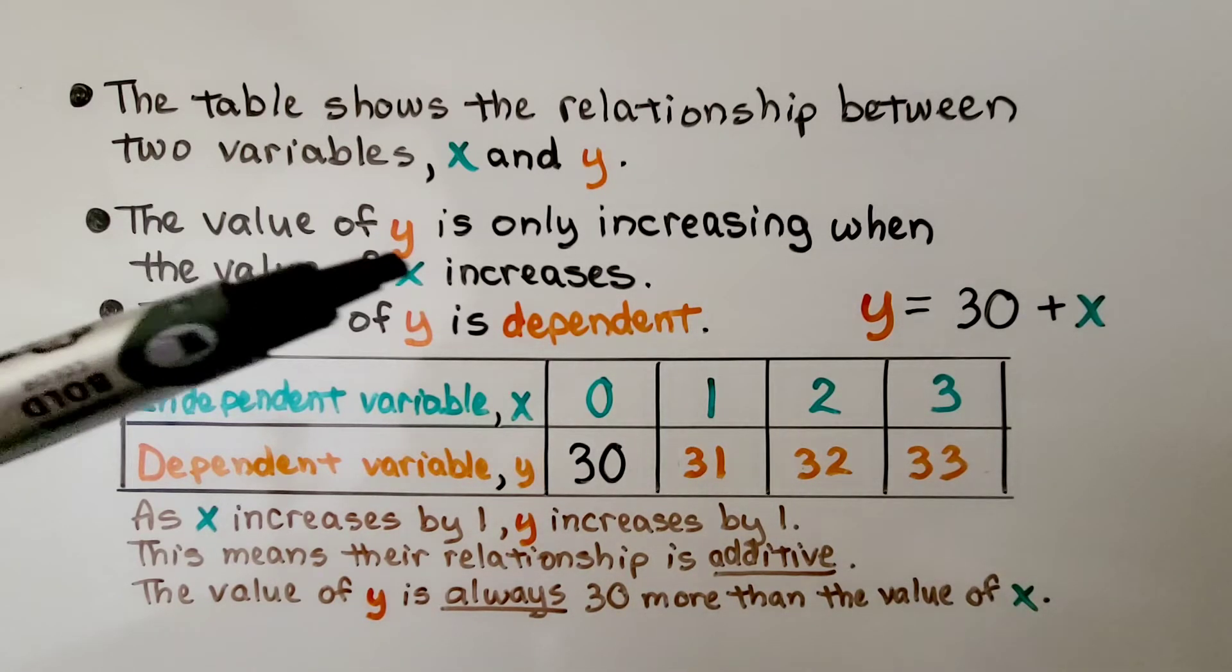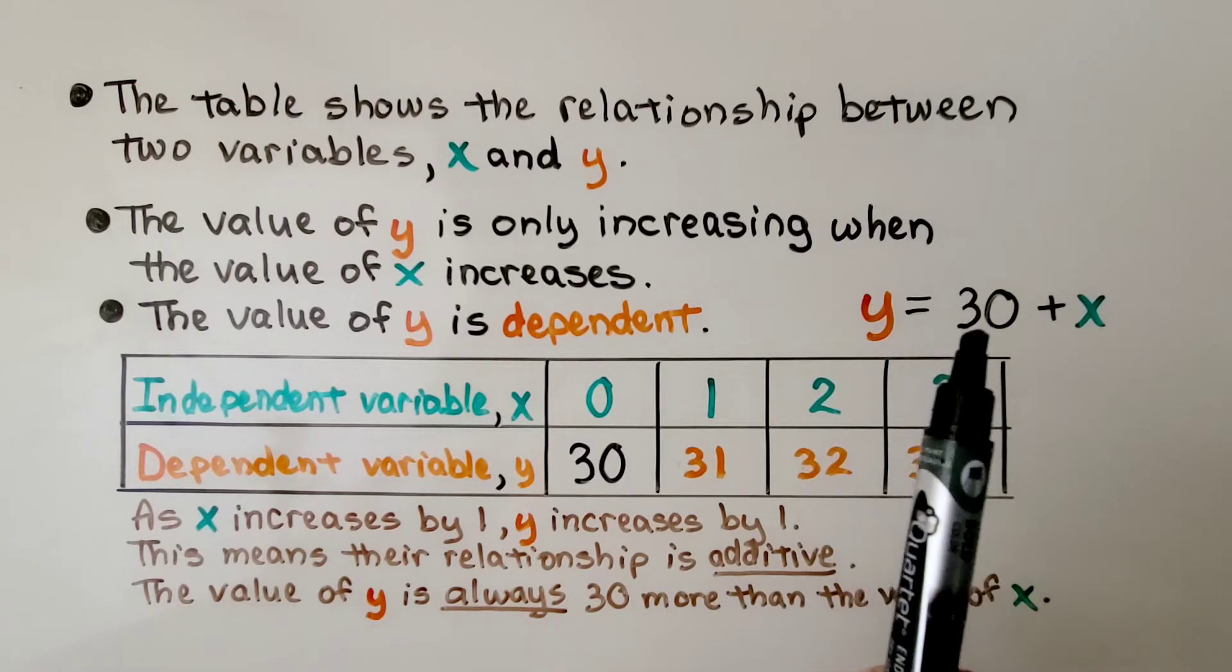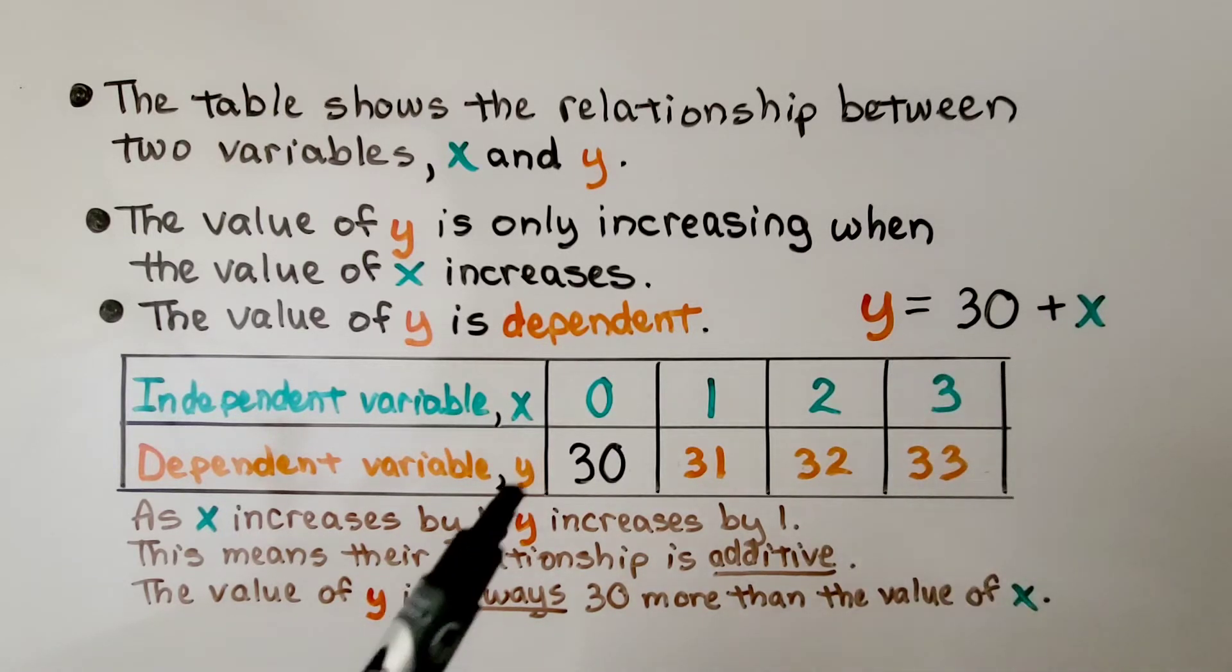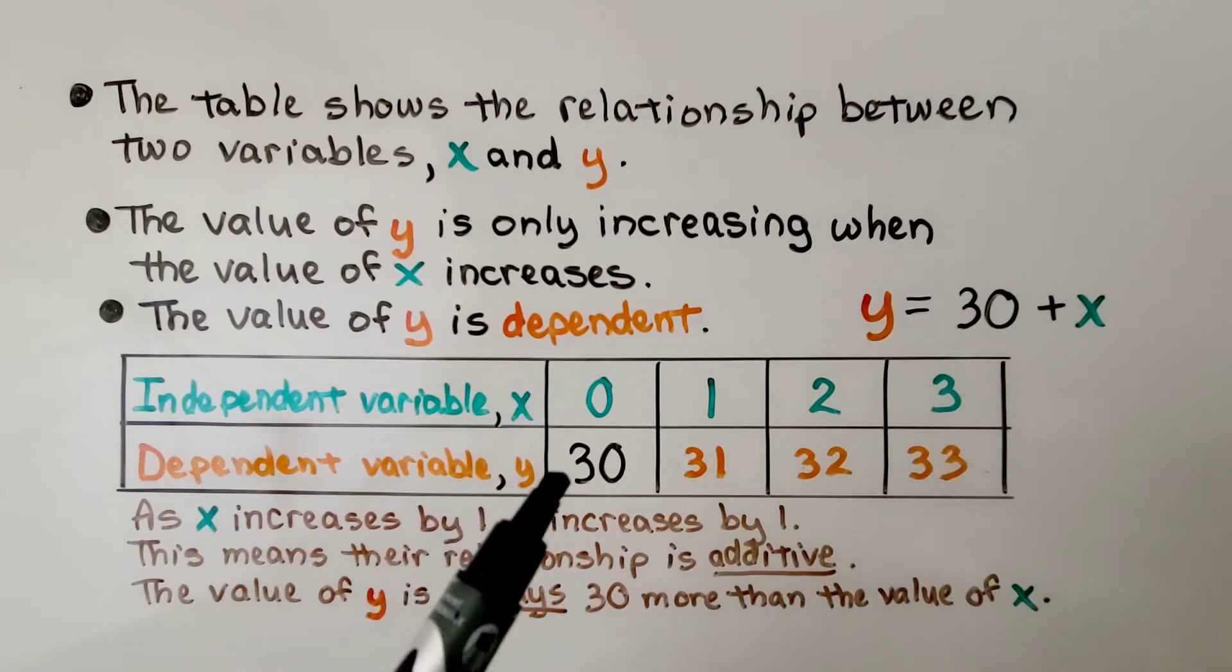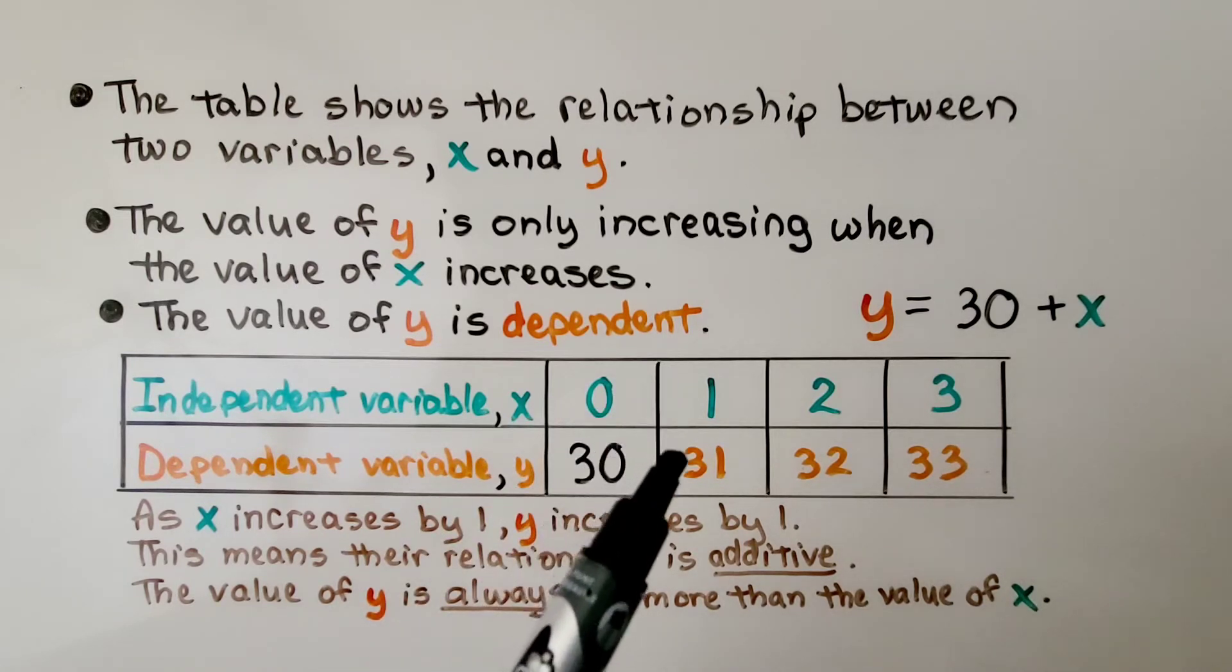As x increases by 1, y increases by 1 each time. The value of y is always 30 more than the value of x. y is equal to 30 plus x. When x is 0, y is 30. As soon as x becomes 1, y becomes 31. It's dependent on x.